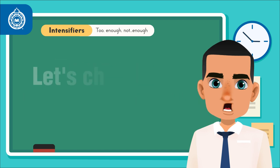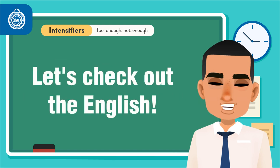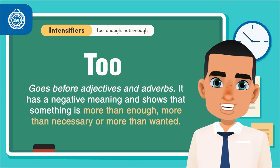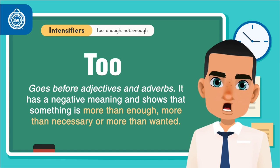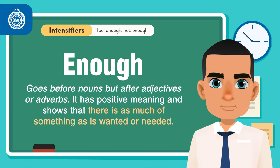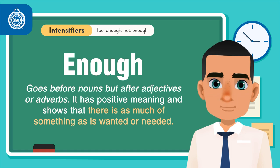Okay, now that you have seen examples, let's check out the English. Too goes before adjectives and adverbs. It has a negative meaning and shows that something is more than enough, more than necessary, or more than wanted. Enough goes before nouns but after adjectives or adverbs. It has a positive meaning and shows that there is as much of something as is wanted or needed.